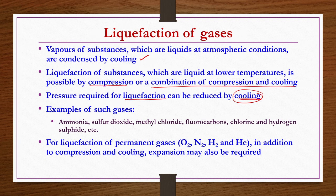For liquefaction of permanent gases like O2, N2, H2, and helium, in addition to compression and cooling, it may also be required to have expansion in the process. Some cycles involve compression, expansion, and cooling. To produce liquids from compressed gases, they must be cooled by one or more approaches: exchange of heat with a colder stream, or expansion through a throttle wall adiabatically — also known as Joule-Thomson expansion.